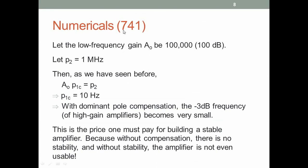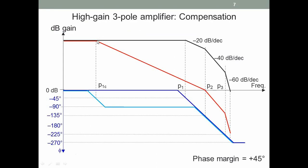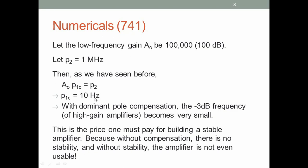Let us do quick numericals for the op-amp 741. The 741 low frequency gain is about 100,000. Let the second pole be at 1 megahertz — in fact the 741 has a unity gain frequency of 1 megahertz. Where should the dominant pole be? The gain bandwidth product is 1 megahertz, so gain times the new bandwidth P1C must equal P2. So 100,000 times P1C equals 10^6, giving P1C equal to 10 hertz. The 3 dB frequency of the 741 is 10 hertz.